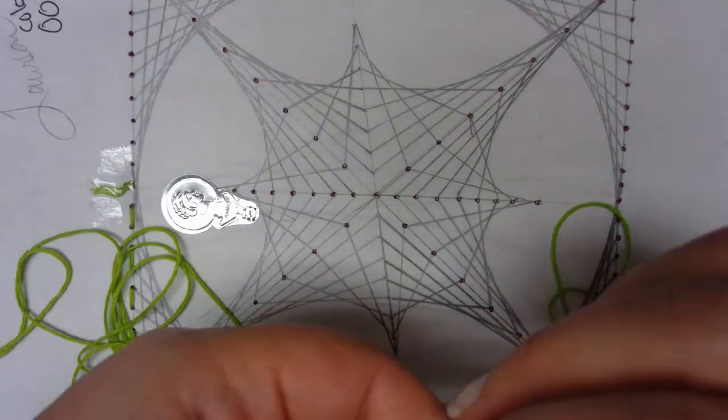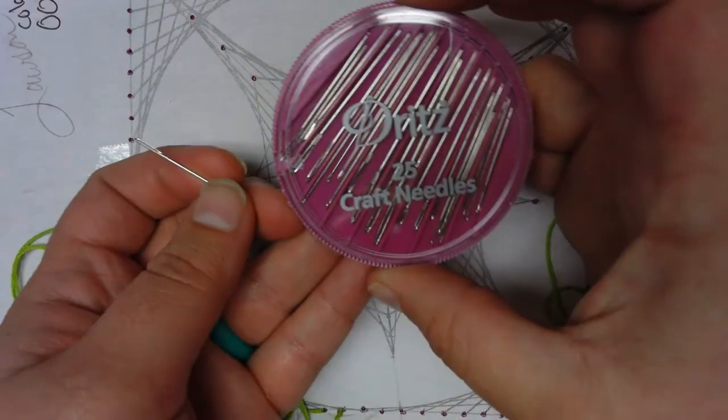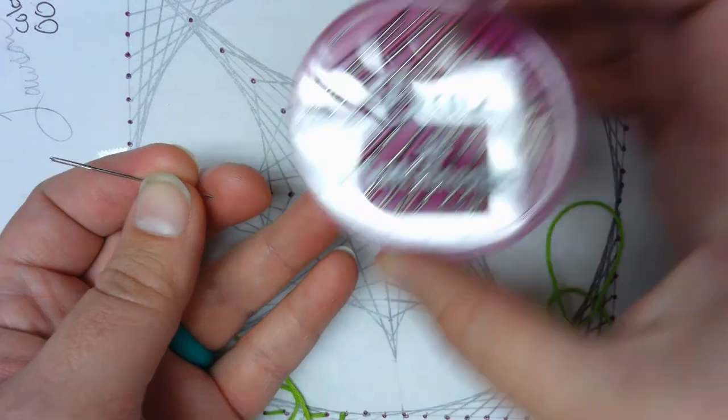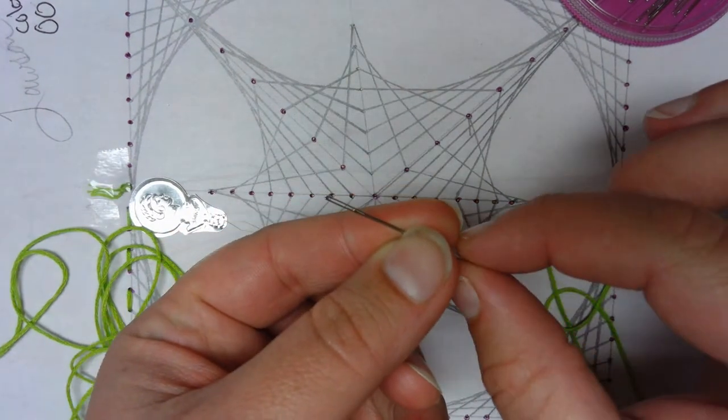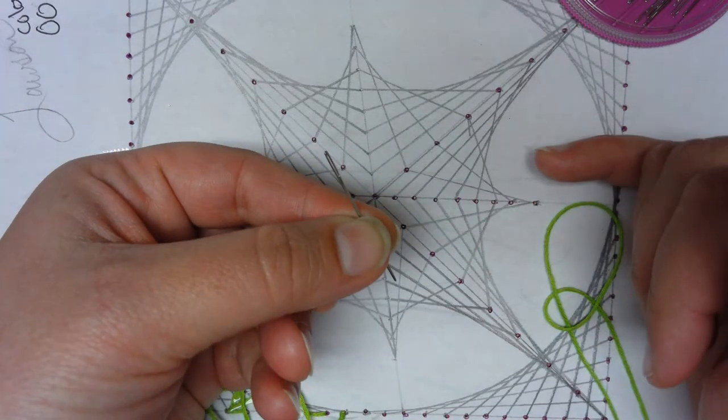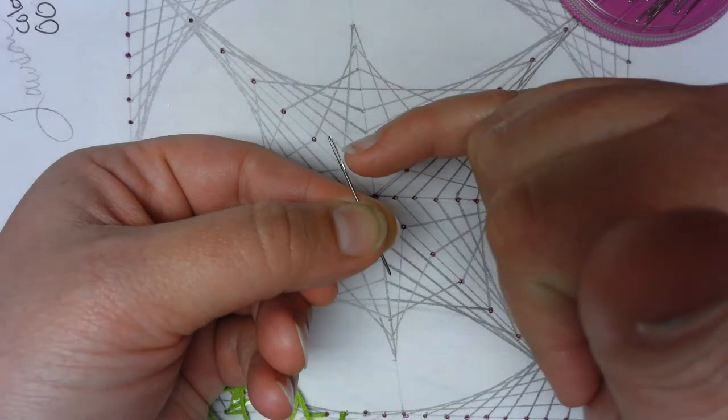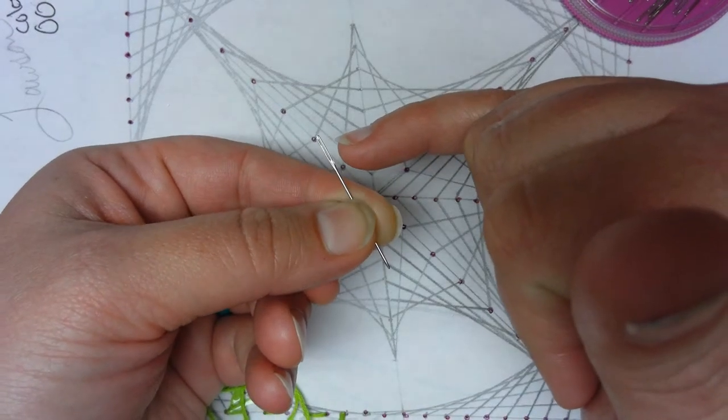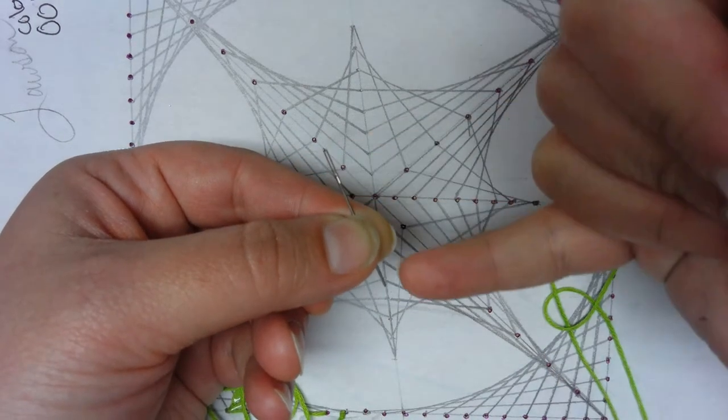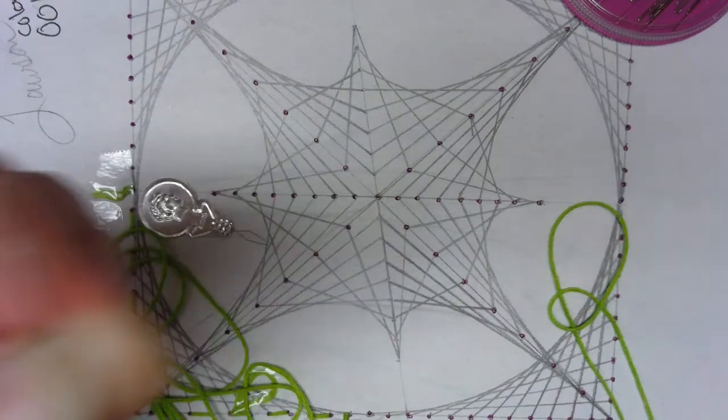The needles we're using for this, since it's a classroom setting, are called craft needles. Craft needles are slightly different than normal sewing needles because the ends, the point ends, are a little bit more blunt than what a sewing needle would be. There's just a tiny bit of anatomy to a needle. There's a side with a hole, that's called the eye of the needle. There's a side with a point. And then you have the shaft, the middle part. Your thread is going to go through the eye of the needle.